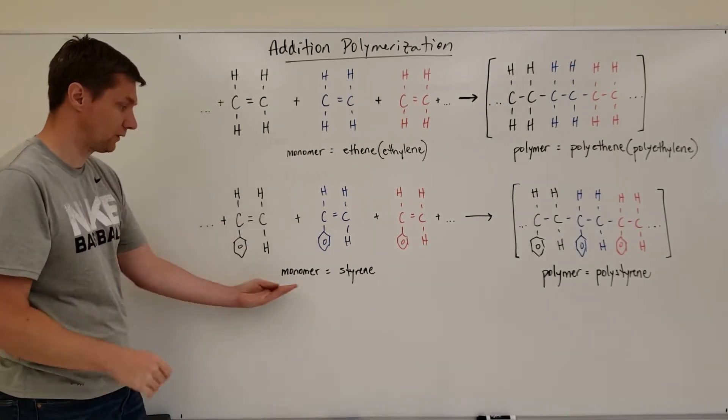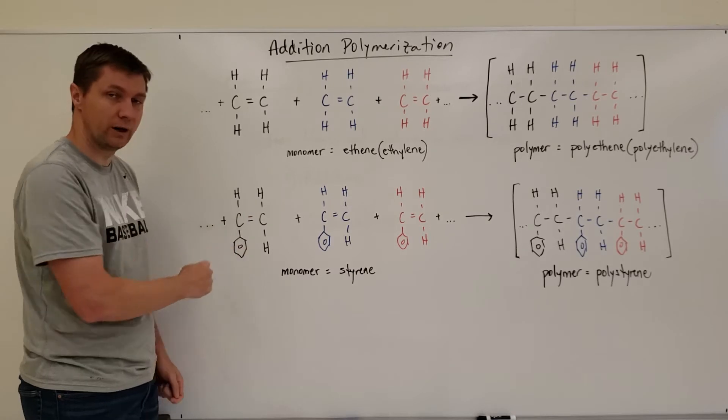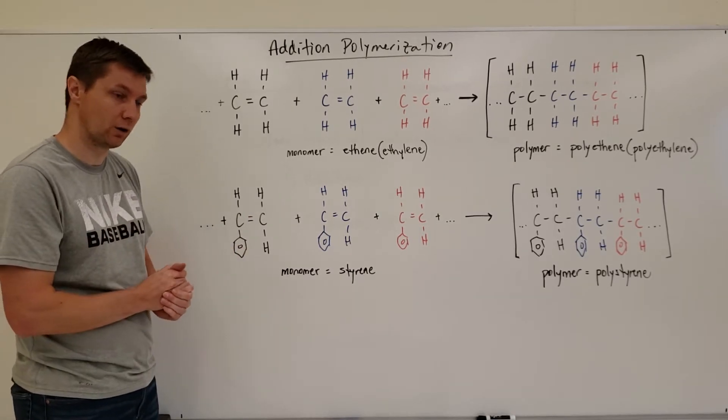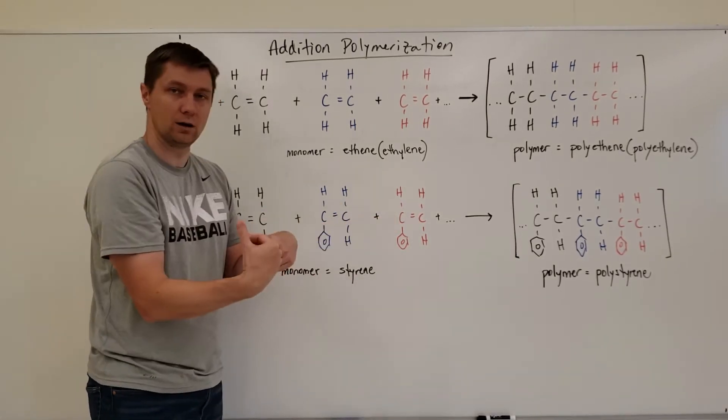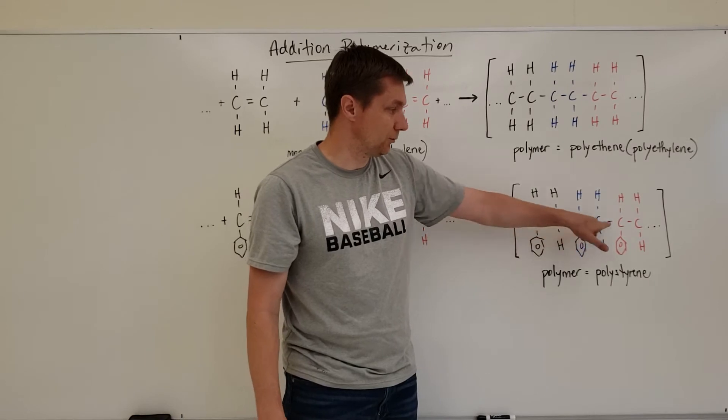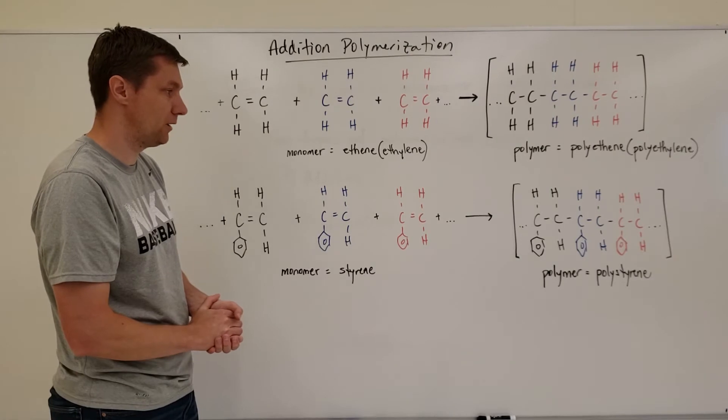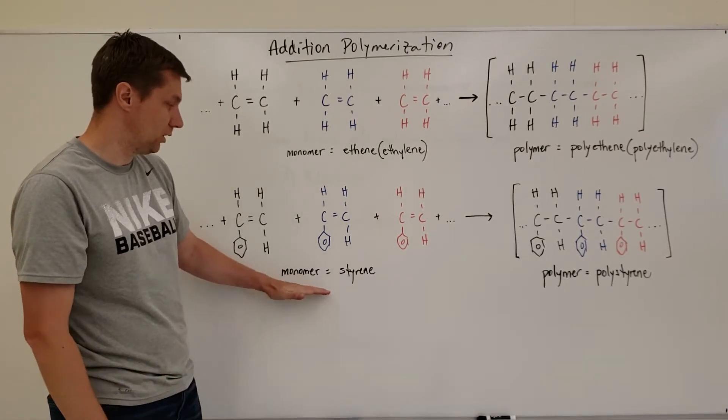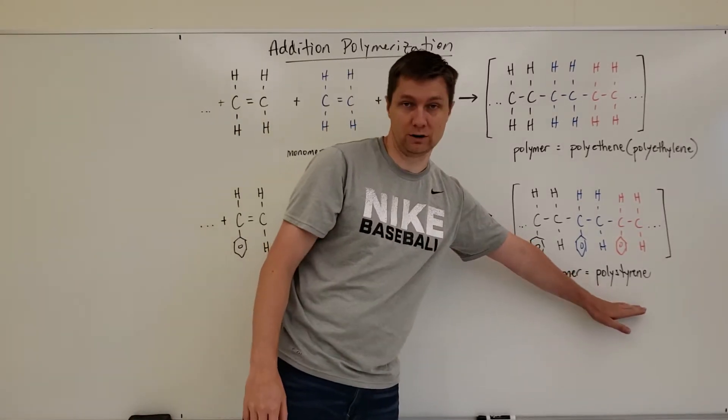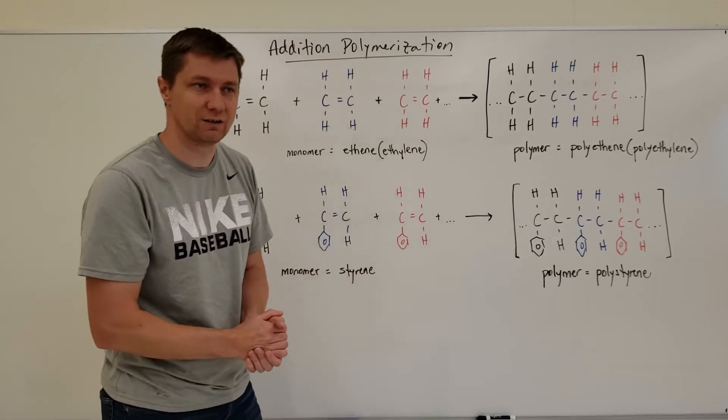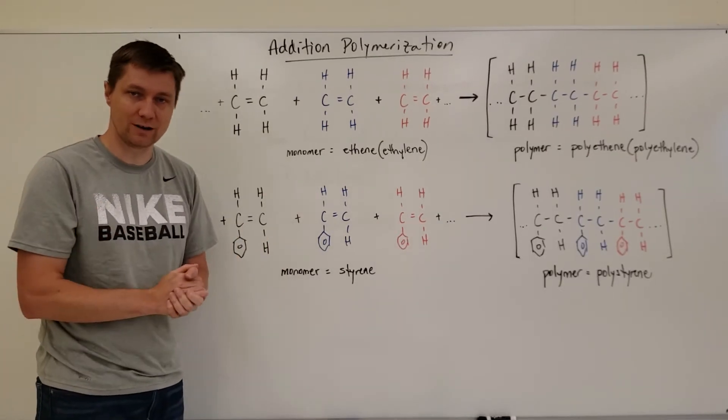Take a look at the second example. We've got the monomer styrene. Styrene is two carbons double bonded with a benzene ring coming off of one of the carbons. You can see here that when this reaction takes place again the double bond comes out and we just have single bonds here in between the carbons so that those monomers can attach to one another and not violate the octet rule. This monomer styrene, when you use many styrenes to make this polymer, we call it polystyrene which is just the scientific name for styrofoam. So that's an addition polymerization reaction.